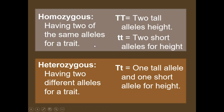Now for some bigger words. Homozygous means having two of the same alleles for a trait — two big T's would be homozygous tall, two little t's would be homozygous short. 'Homo' means same. Heterozygous means different — 'hetero' means different — so the two alleles are different: one dominant and one recessive, like one tall allele and one short allele. Remember: homozygous means same, heterozygous means different.